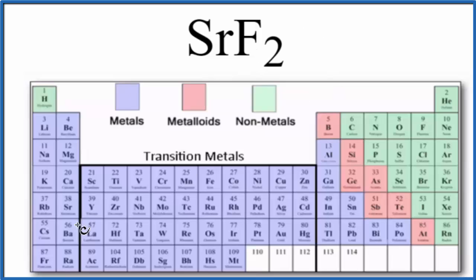When we look at the periodic table, we have strontium right here. Strontium, that's a metal. Then fluorine over here. Fluorine, that's a non-metal. In general, when we have a metal and a non-metal, we have an ionic compound.